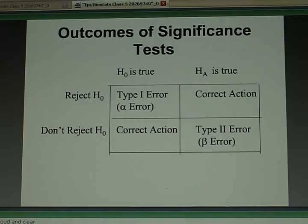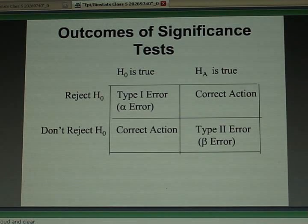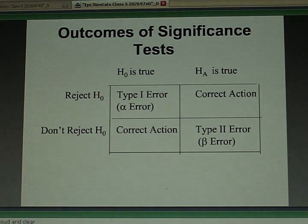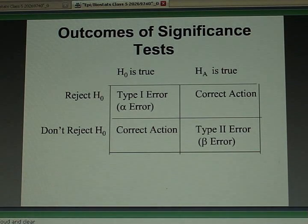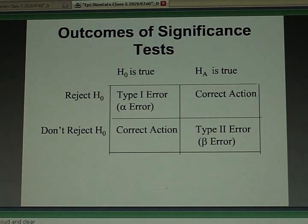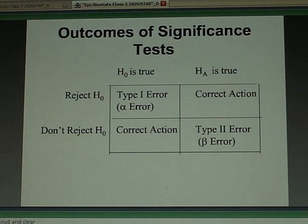You've got to be living with the chances of making this error by saying, I'm willing to live with a 5% chance of making that error. That's what most statisticians will do. They'll call something statistically significant if your p-value is less than 0.05.